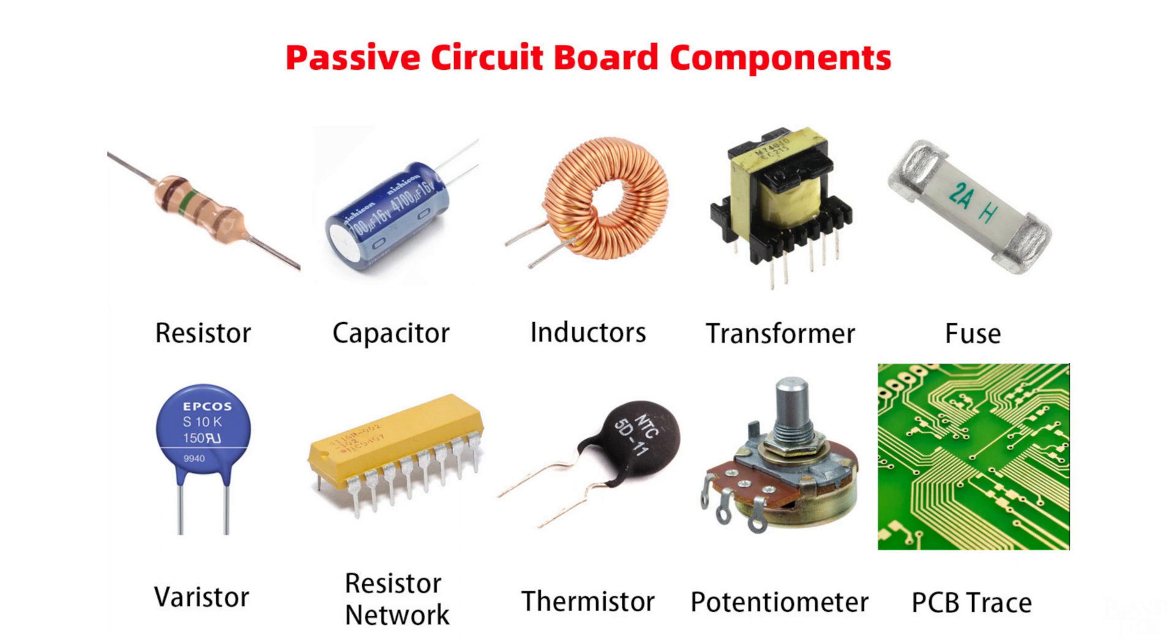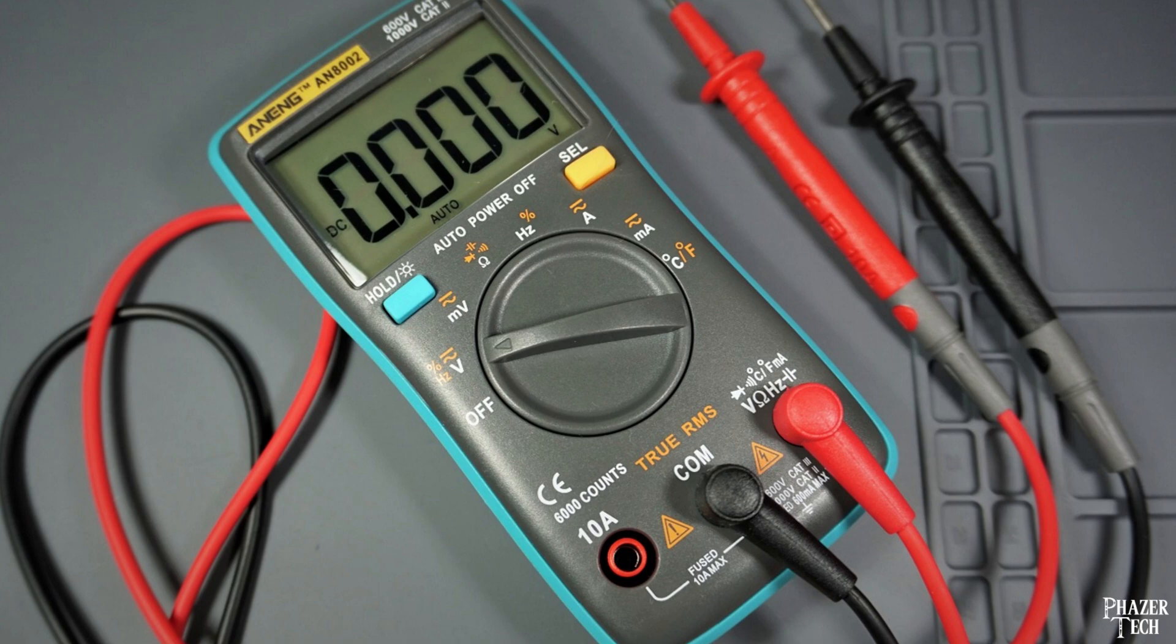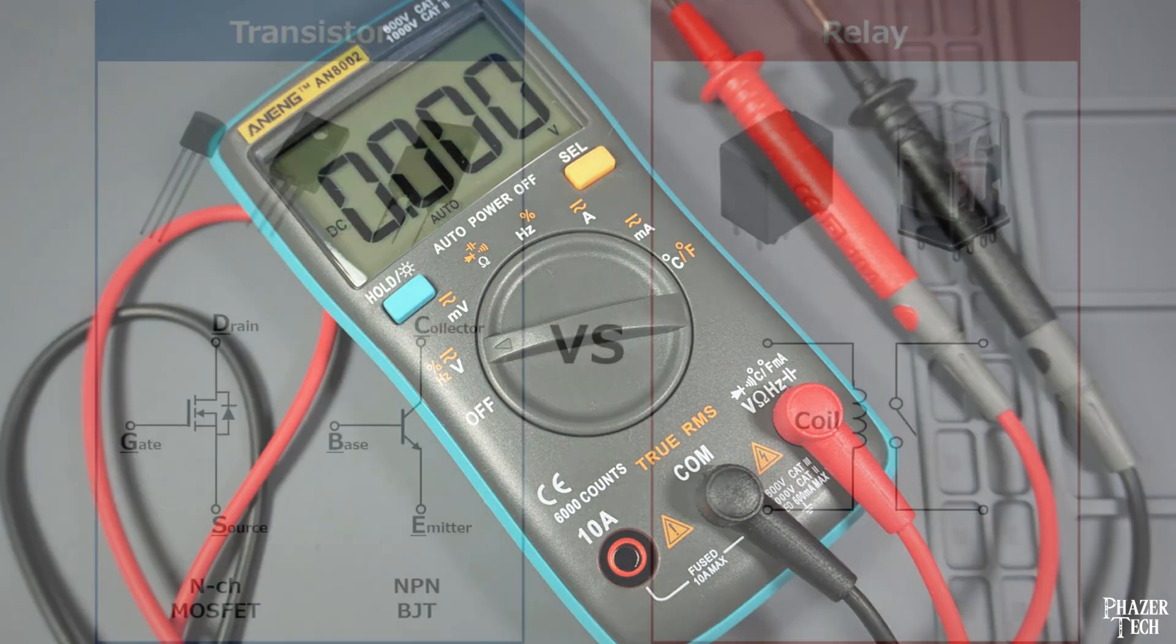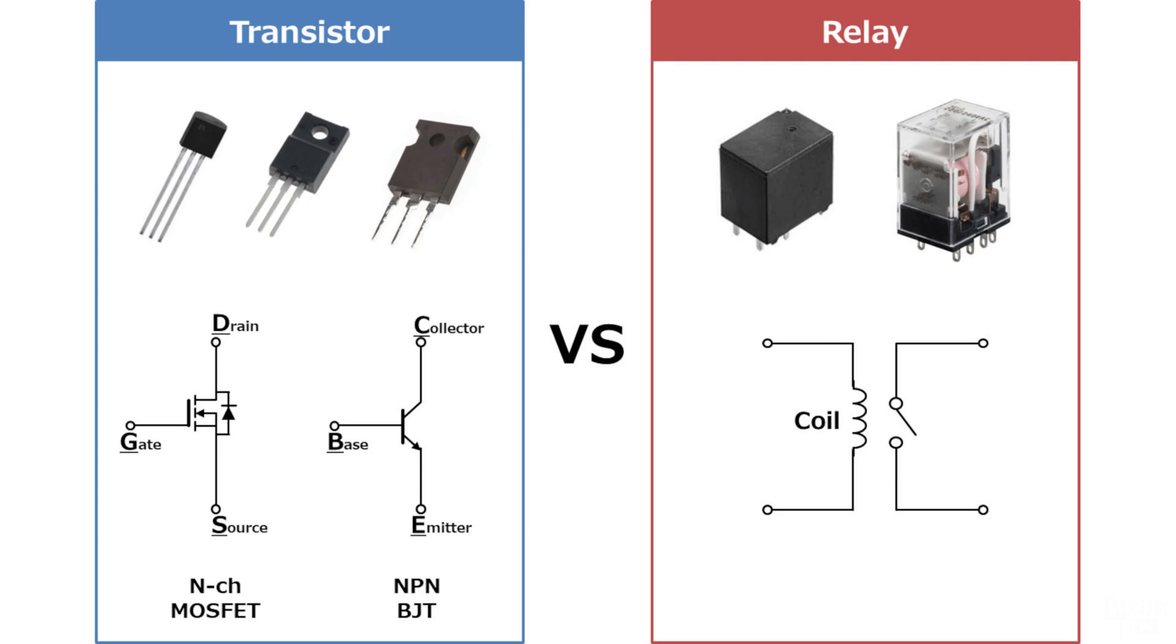The next video in this series will talk about passive components such as resistors, capacitors, inductors, and how to use a multimeter to do basic readings. The third video will talk about transistors and relays, and how to use them.